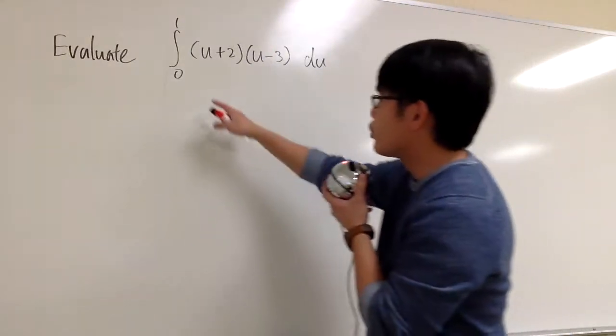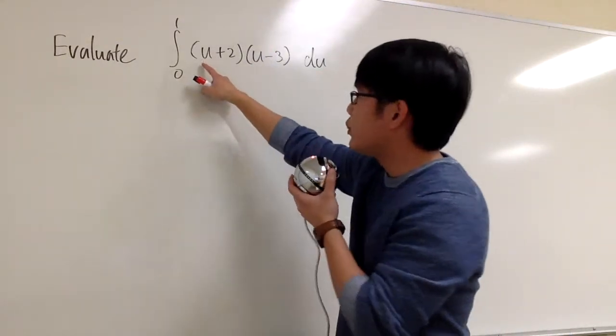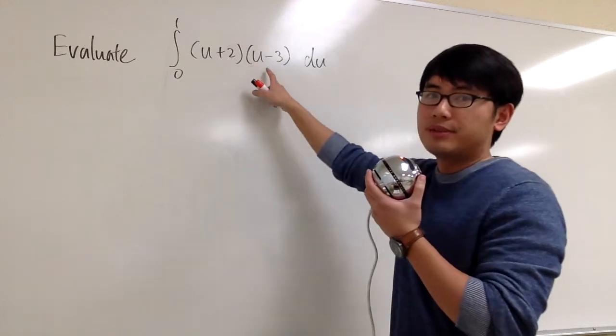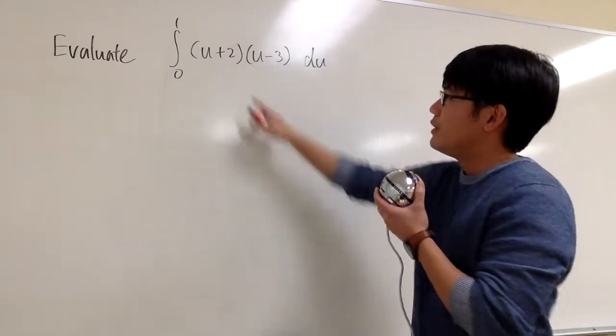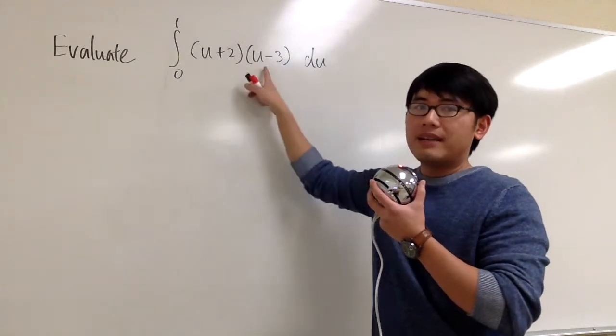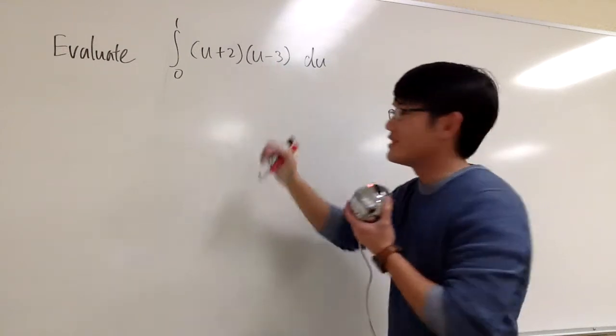Let's work this out, the integral from 0 to 1, and here we have u plus 2 times u minus 3. Well, this u is going to be affected by that u, so we should multiply this out first. So we'll do that.